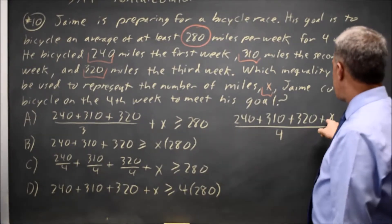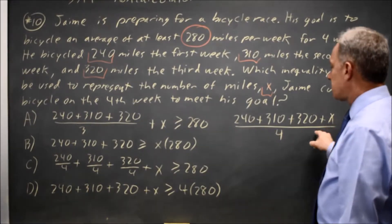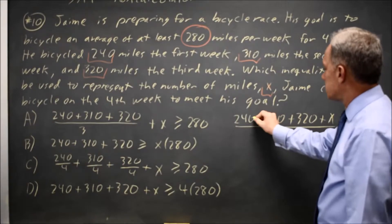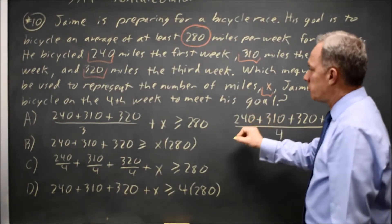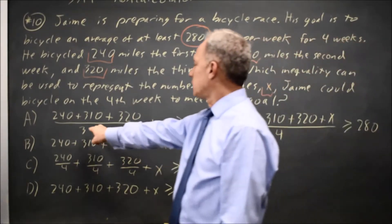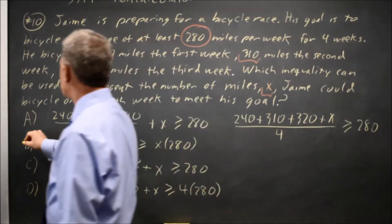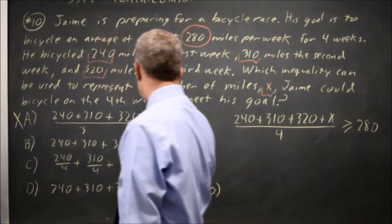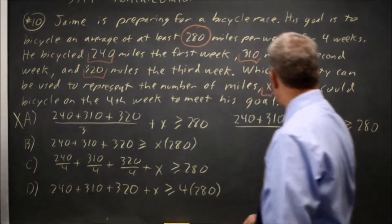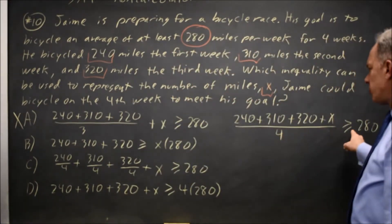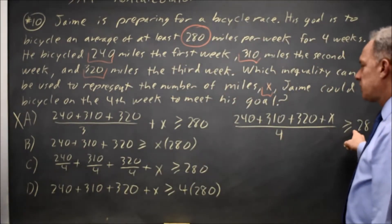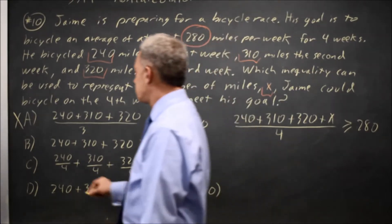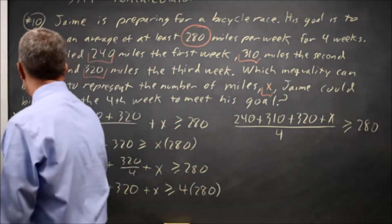If I separated the X, I would get X over 4, and these three numbers would also be over 4, not 3. So choice A is wrong. If I multiply both sides by 4, I would not get times X on the right. So choice B is wrong.